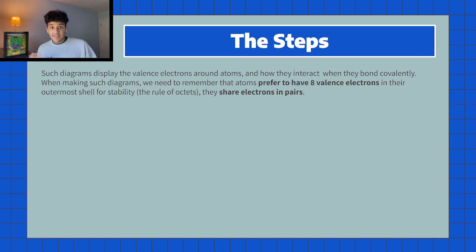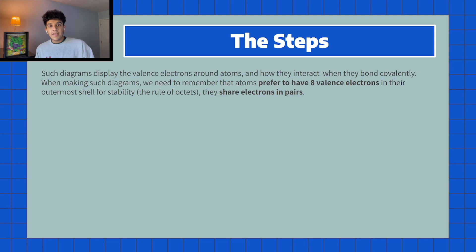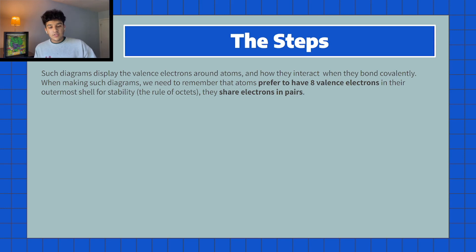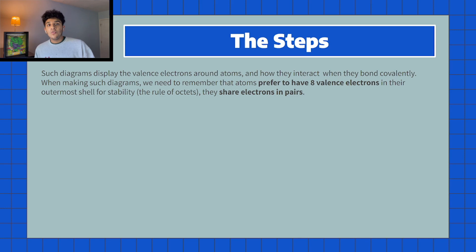Also, since it's a covalent bond we're going to be sharing bonds, and just know that each shared bond counts as two valence electrons for every atom. I will explain that further when we dive into the examples, but for now let's go through the step-by-step process of how to draw them out.